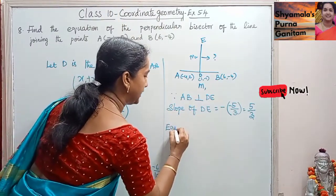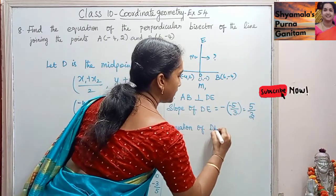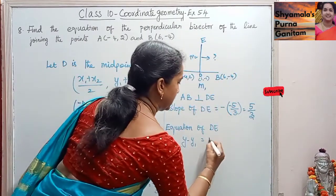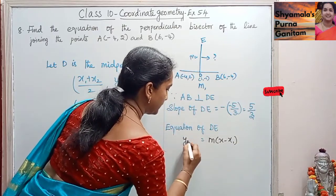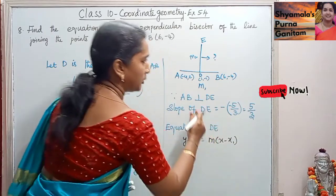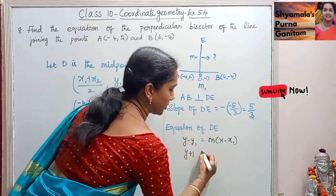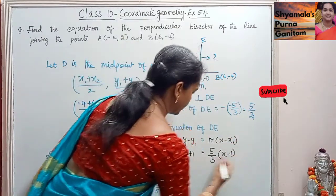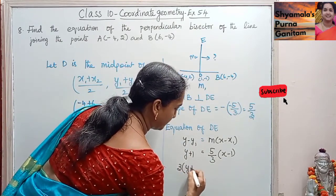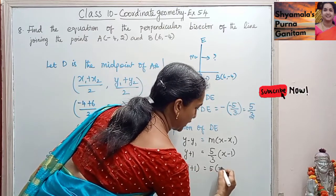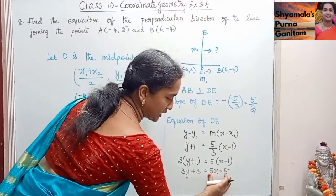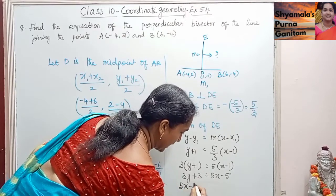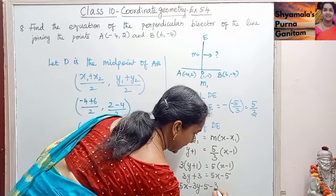Equation of DE using point-slope form: Y - Y1 = M(X - X1). So Y - (-1) = (5/3)(X - 1), which gives Y + 1 = (5/3)(X - 1). Cross-multiplying: 3(Y + 1) = 5(X - 1), so 3Y + 3 = 5X - 5. Rearranging: 5X - 3Y - 5 - 3 = 0.